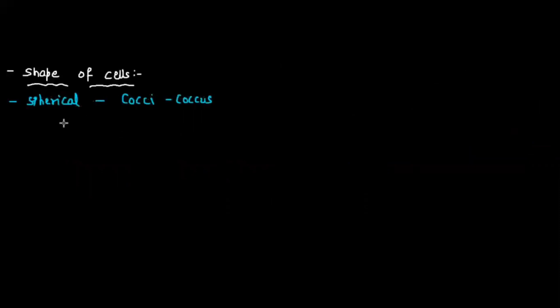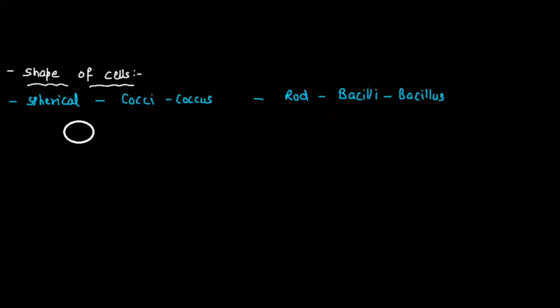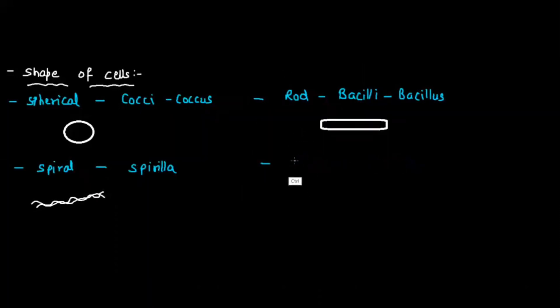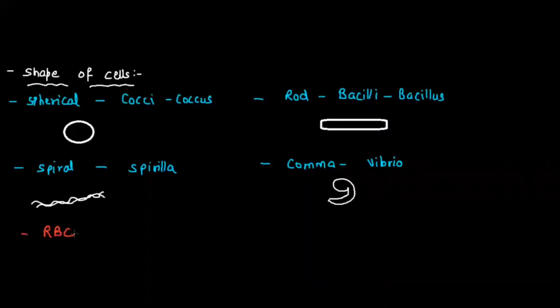Bacteria come in different shapes. Spherical-shaped bacteria are called cocci (singular: coccus). Rod-shaped bacteria are called bacillus (plural: bacilli). Spiral-shaped bacteria are called spirilla. Comma-shaped bacteria are called vibrio. Bacteria may also be flagellated, which helps in locomotion, or non-flagellated.